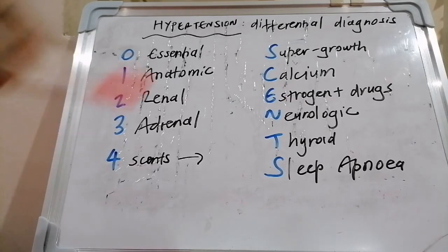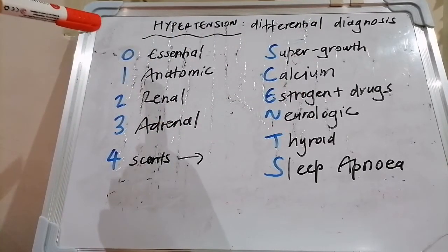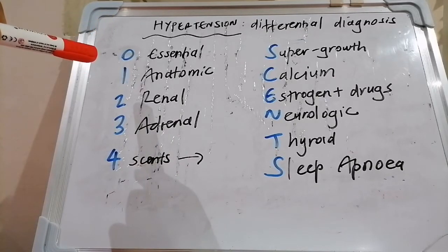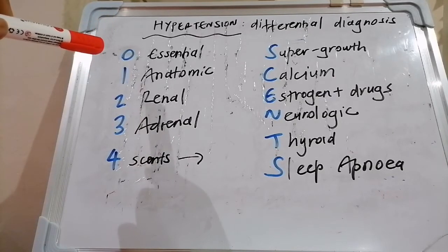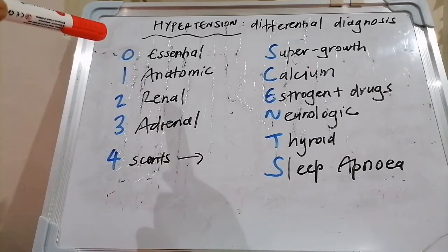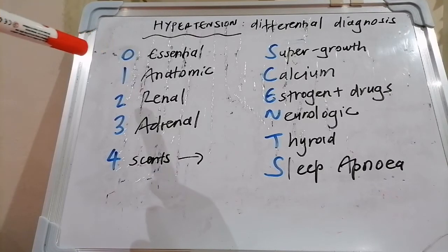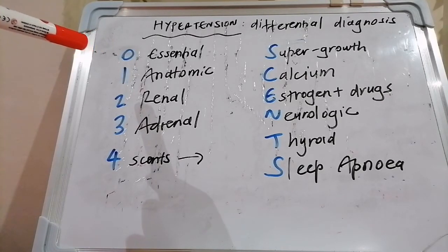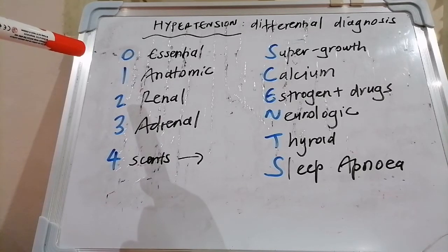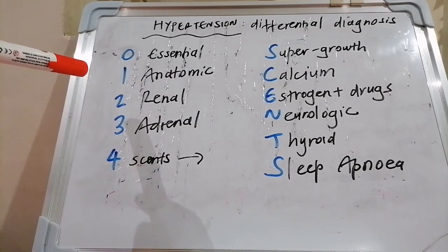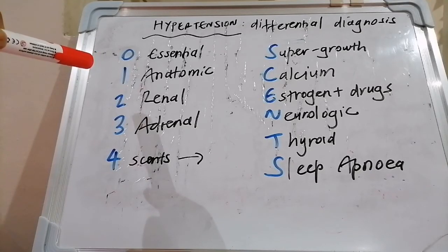There's a varied etiology. Zero is the usual run-of-the-mill essential hypertension. Then one is anatomical causes like coarctation of the aorta and aortic dissection. Big clues for coarctation include radio-radial delay, radio-femoral delay, upper limb hypertension, and rib notching on the chest X-ray.